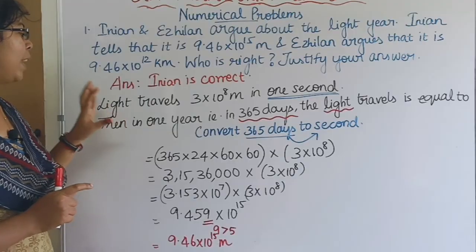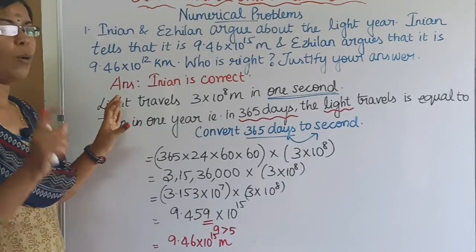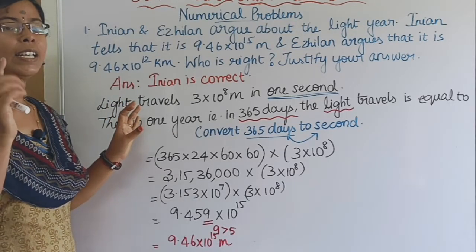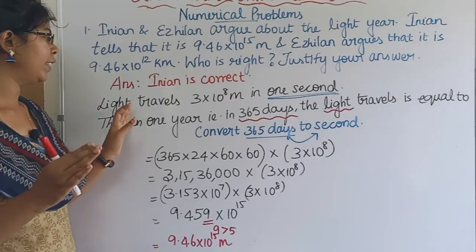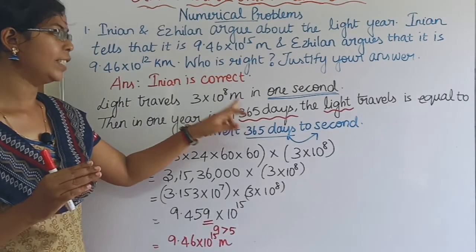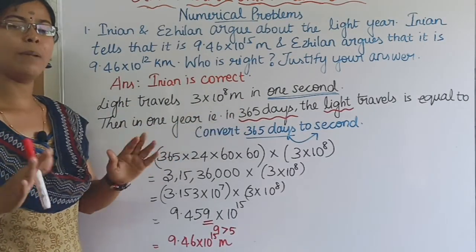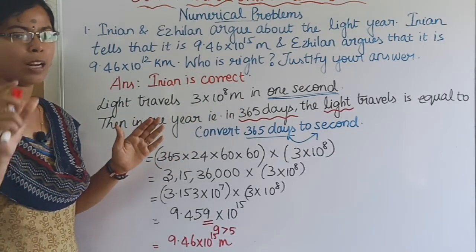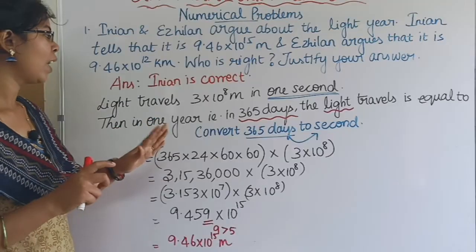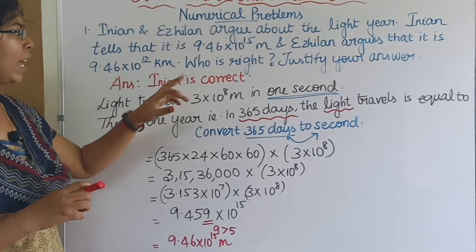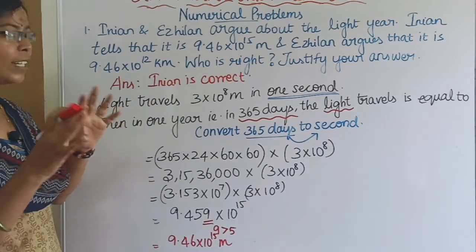A light year is the distance light travels in one year. In one second, light travels 3 × 10⁸ meters. Now, we need to find the distance light travels in one year.